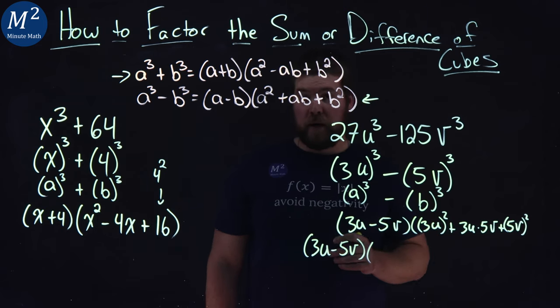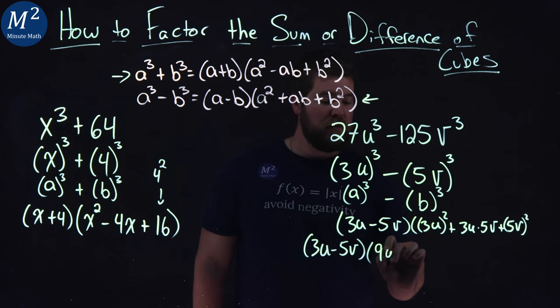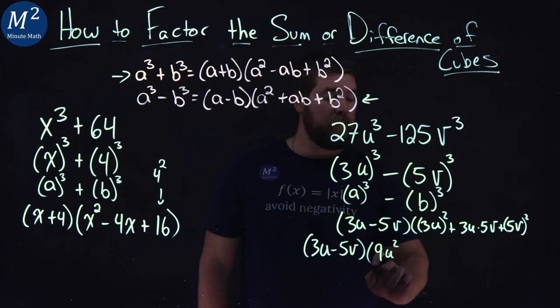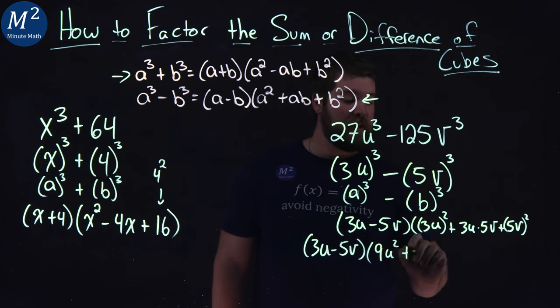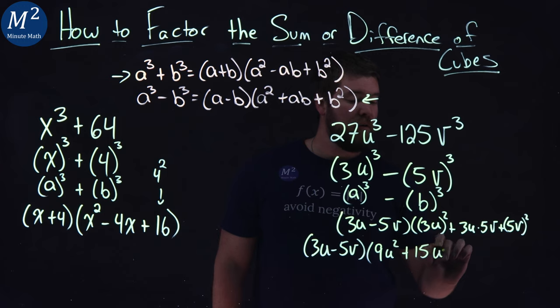3u all squared is a 9u squared. Right. 3 squared is a 9. Plus 3 times 5 is a 15uv.